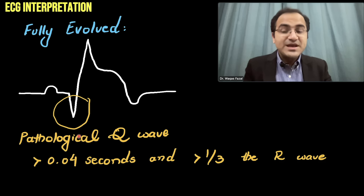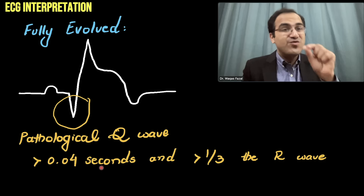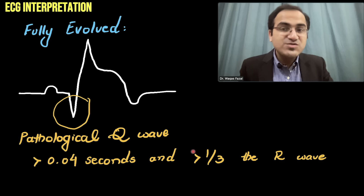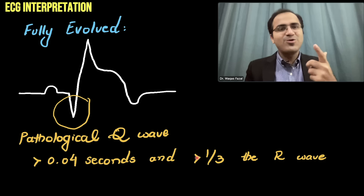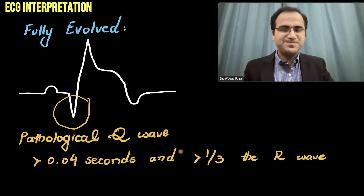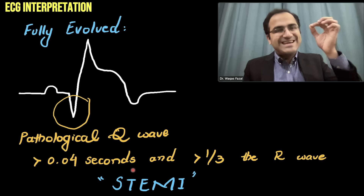What counts as a pathological Q wave? If its duration is greater than 0.04 seconds — that is, more than one small box — or if it is more than one-third of the R wave height, it is a pathological Q wave. Pathological Q waves indicate infarction — dead tissue. This fully evolved phase with pathological Q waves is classical STEMI: ST elevation myocardial infarction.